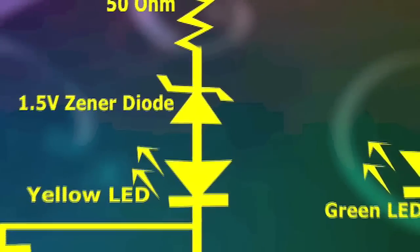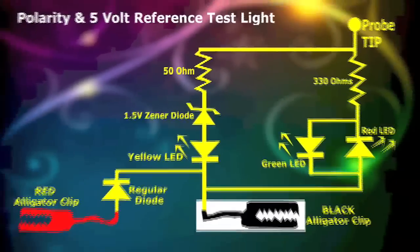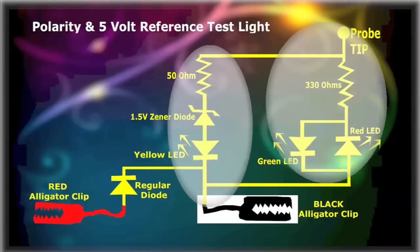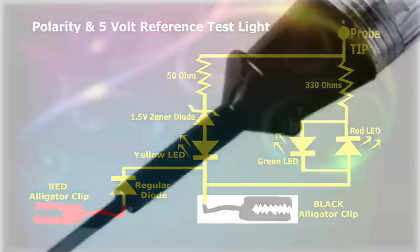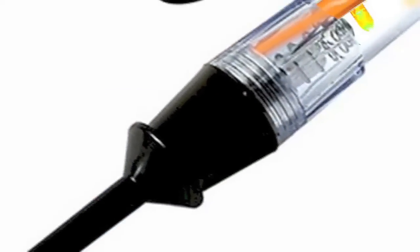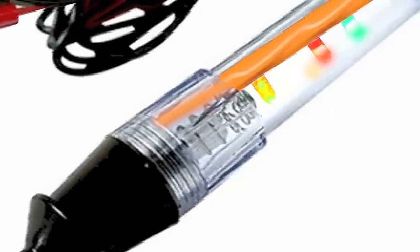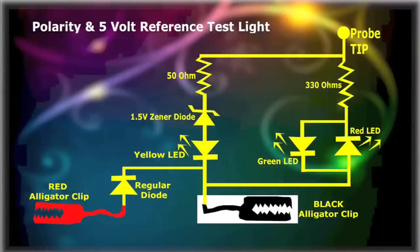The Dual Polarity and 5V Reference Test Light circuit is a very simple one. It employs two basic circuits within the test light, which you can then encase in a regular clear inexpensive test light body that you can purchase at the local parts place.